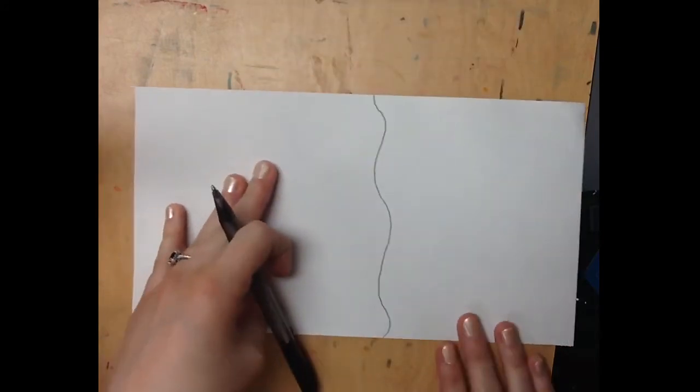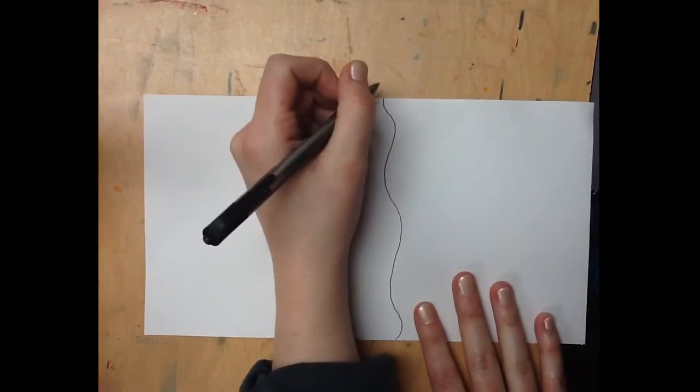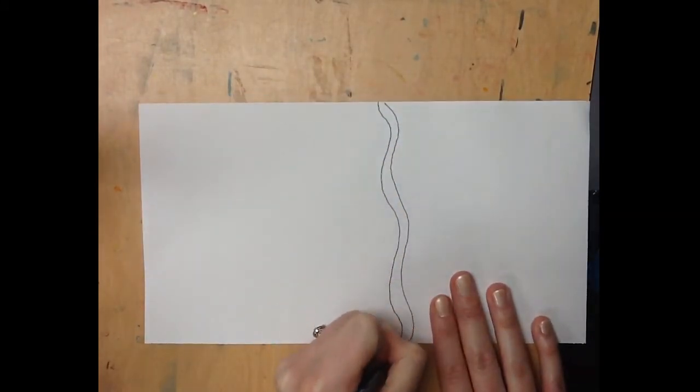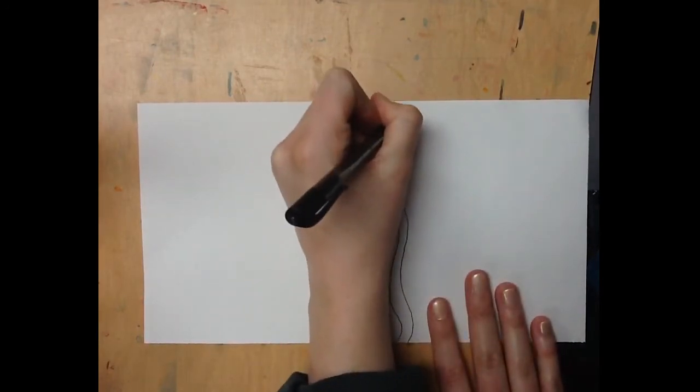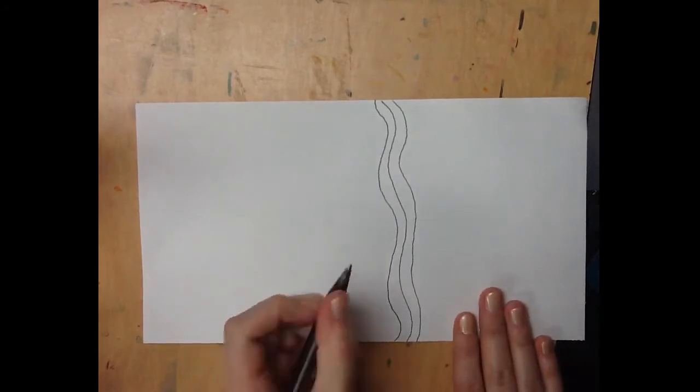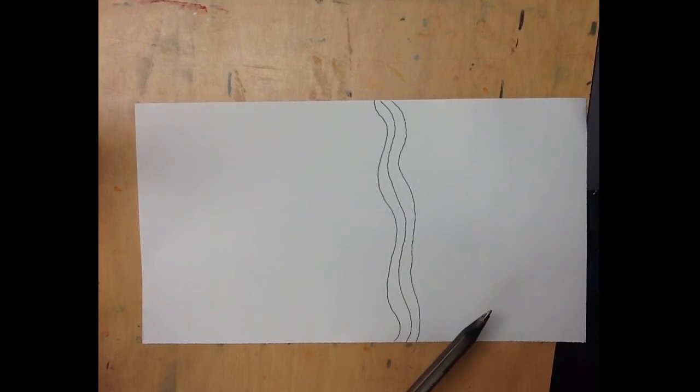I'm going to turn it this way. Now on the right side, I'm going to copy this line with my pen. And I'm just going to create a bunch of lines that follow that same pattern going all the way from here to the other side.